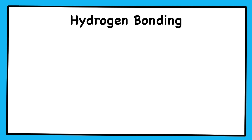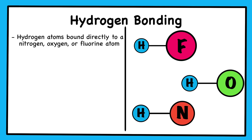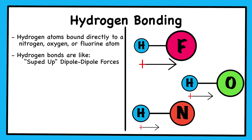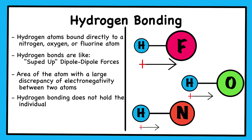Polar molecules containing hydrogen atoms bound directly to a small electronegative atom, such as fluorine, oxygen, or nitrogen, exhibit intermolecular forces that we call hydrogen bonding. We can think of hydrogen bonds as souped-up dipole-dipole forces. This is due to the large discrepancies in electronegativity between the hydrogen atom, which is extremely small, and nitrogen, fluorine, or oxygen, which are usually extremely electronegative. This difference in electronegativity creates a stronger dipole-dipole force. It is worth noting that, though we call this hydrogen bonding, it is not the chemical bond that holds the molecule together — instead, it is the force that holds one molecule close to another.